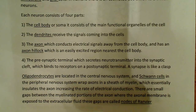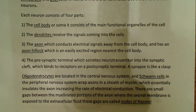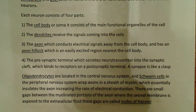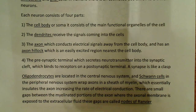Each neuron consists of four parts. The first is the cell body, or soma, which consists of the main functional organelles of the cell — things like the nucleus and mitochondria. You'll find a nucleus in the cell body.